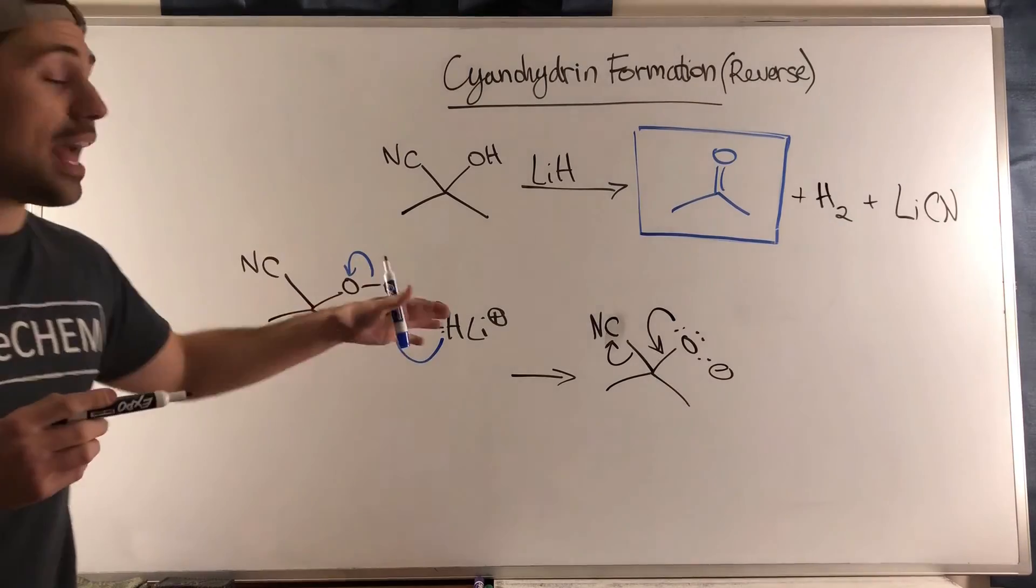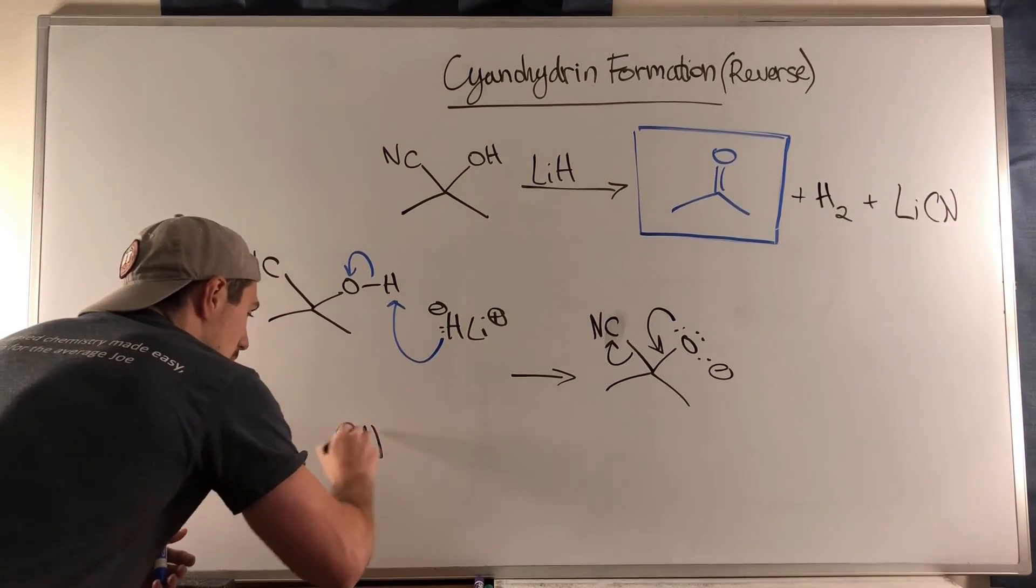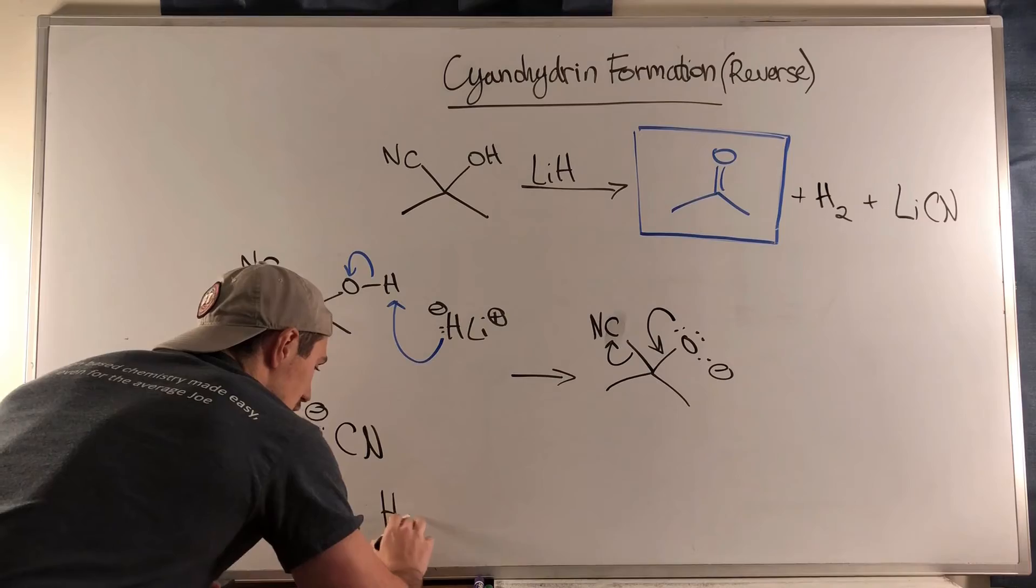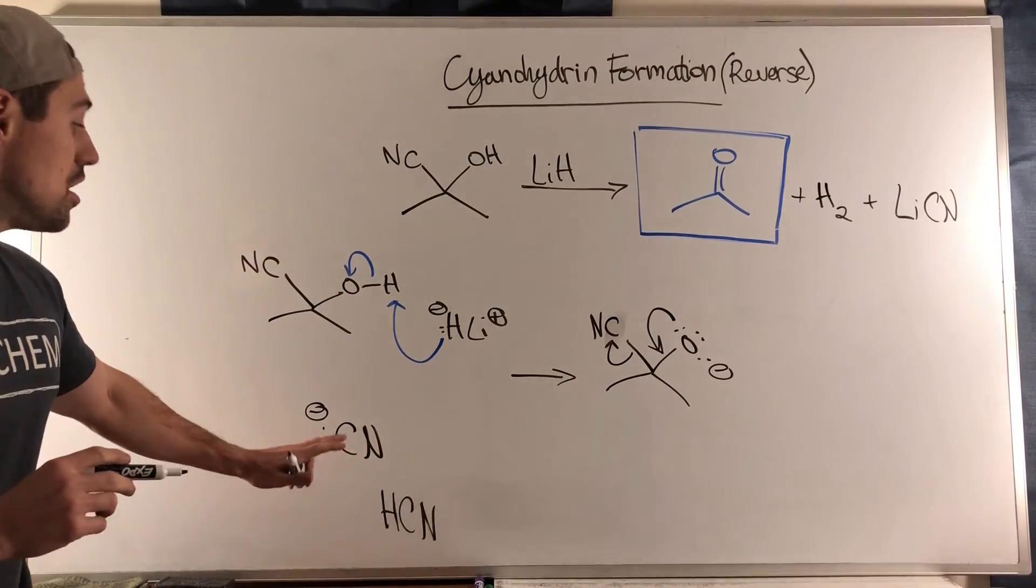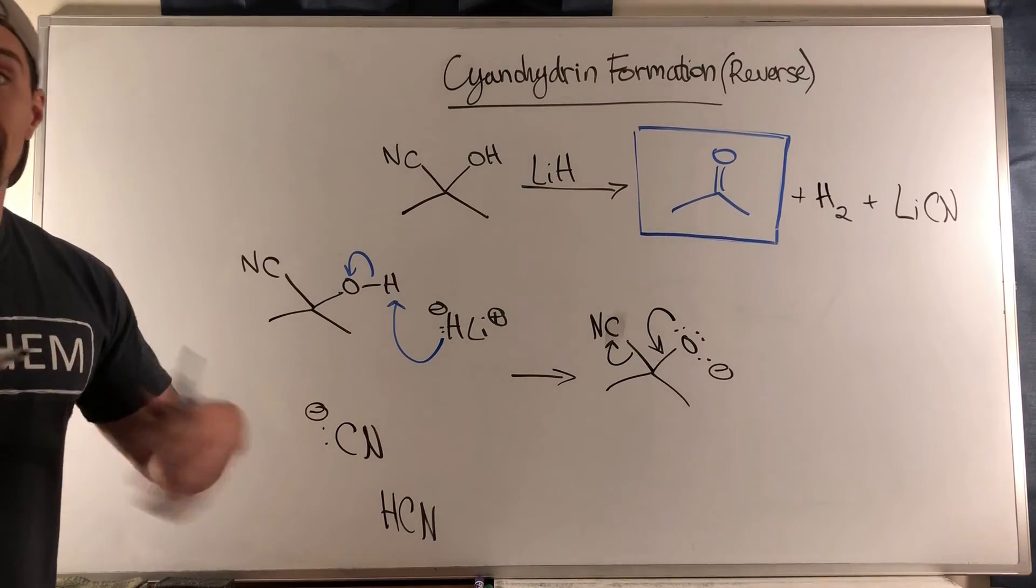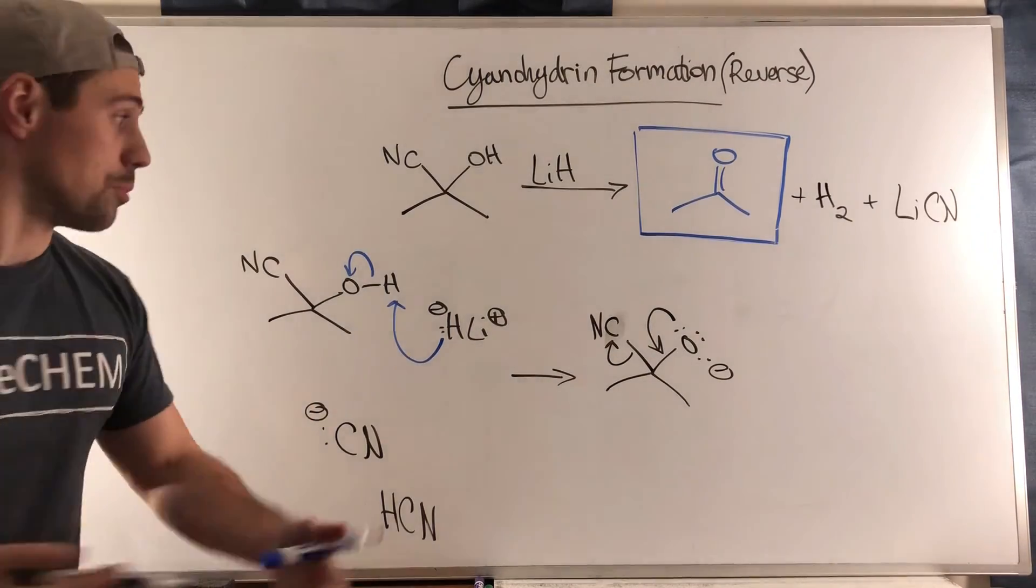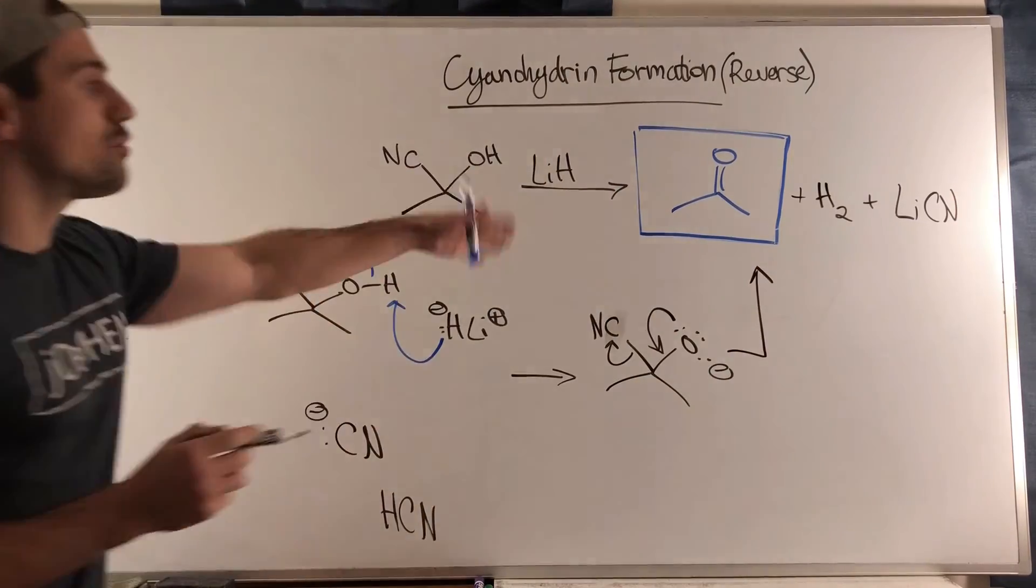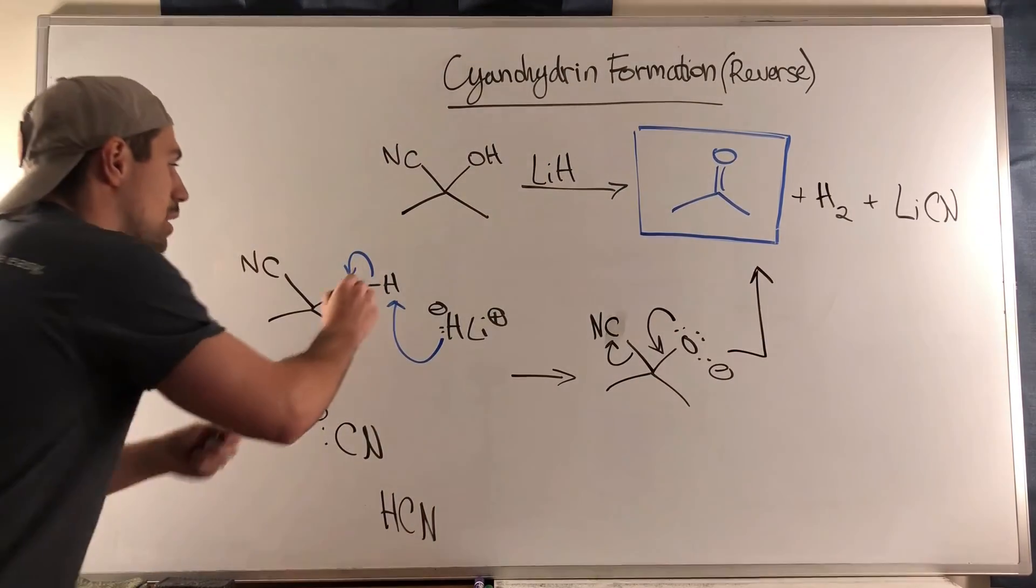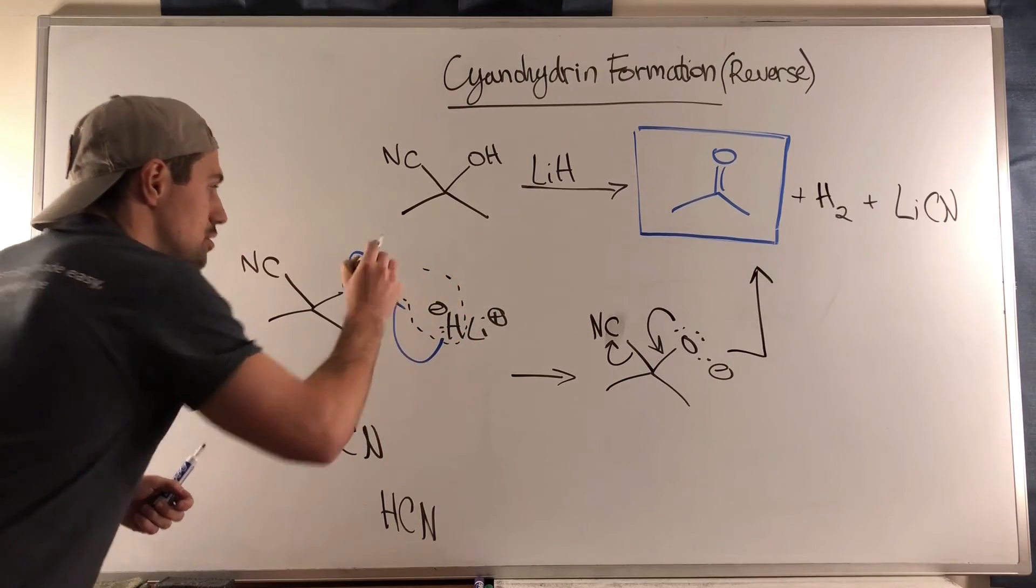Now remember, CN minus comes from HCN, and this is a relatively good acid. This is weak and stable as a base, which means it's a good leaving group, so this is fine. When you do this, you can reform your carbonyl. You see this is where we form the hydrogen gas, the H2.